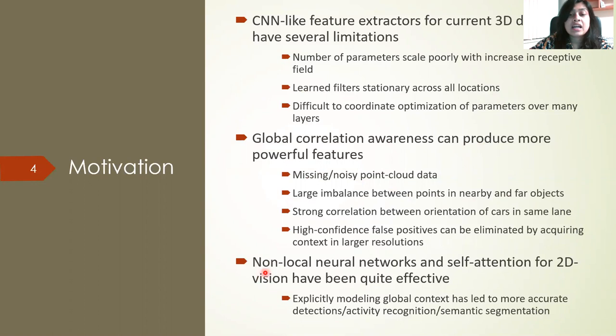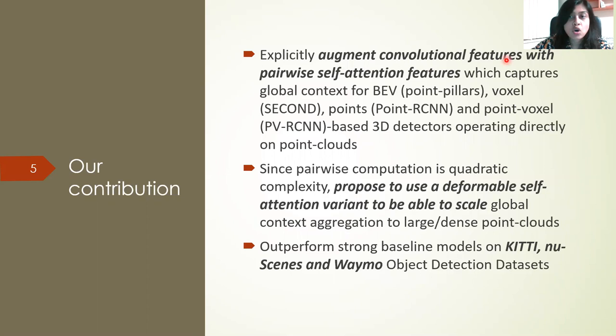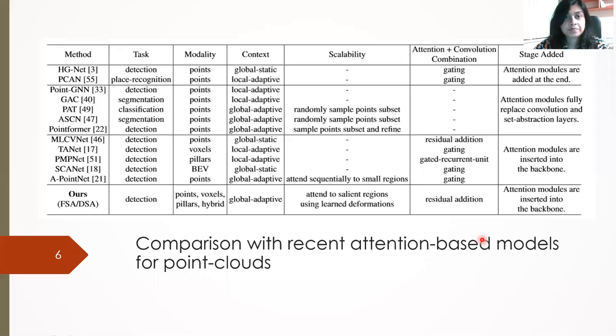Non-local neural networks have also been used for 2D vision and have been quite effective. For our contribution, we explicitly augment convolutional features with pairwise self-attention features. Since this pairwise computation is quadratic, we propose to use a deformable self-attention variant to scale this global context aggregation to large dense point clouds. We also outperform strong baseline models on KITTI, nuScenes, and Waymo object detection datasets.